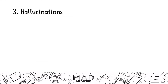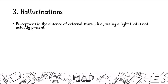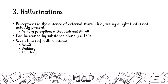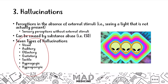Let's talk about hallucinations, which is the last portion of psychosis. In hallucinations, a patient's perception occurs without an external stimulus — they might see things that aren't happening. These sensory perceptions arise internally without external stimuli. This can also be caused by substance abuse — if someone's taking LSD, they're probably going to hallucinate. There are seven different types of hallucinations you should definitely know, and we're going to talk about them right now.